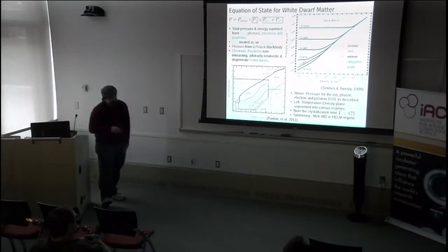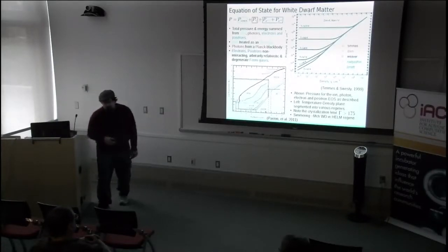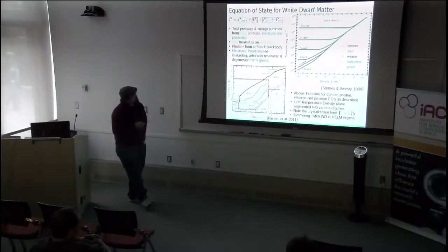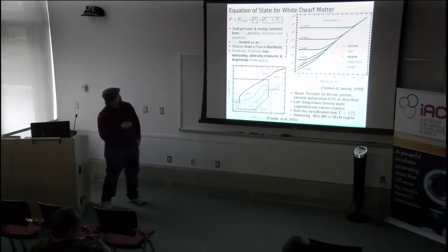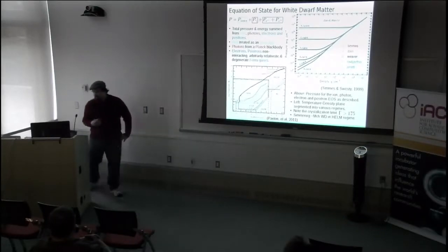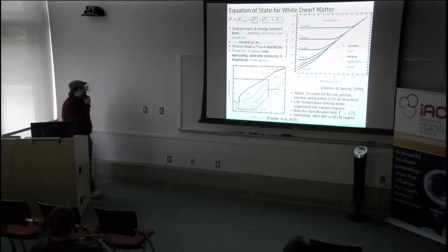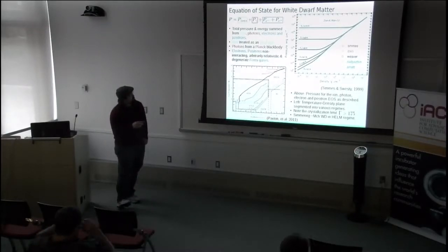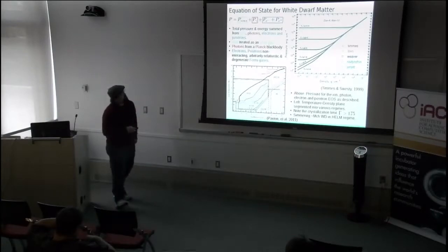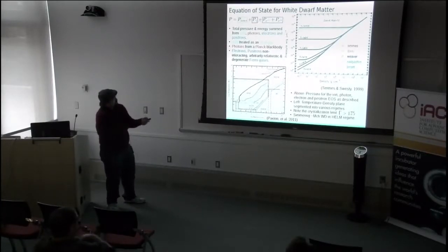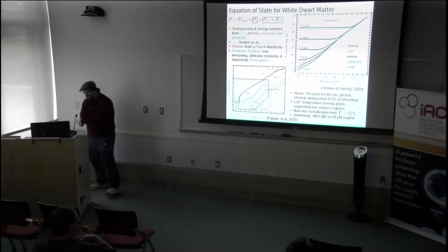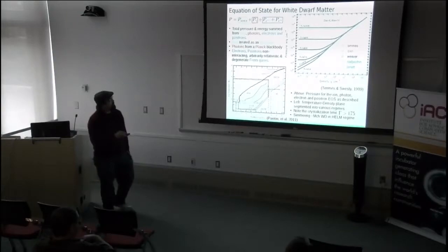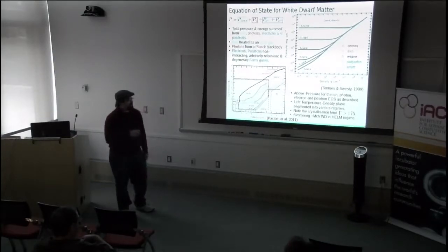The total pressure and total energy of the matter is the sum of contributions from ions, photons, and electrons and positrons. Ions are treated as an ideal gas, photons as a Planck blackbody spectrum, and electrons and positrons as arbitrarily relativistic, arbitrarily degenerate Fermi gases that don't interact with each other. If you have detailed questions about this, you're in luck because a condensed matter expert is here.